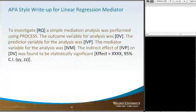It's a bit more simple for a mediator, the APA write-up. The caveat here is that this write-up is just a small subset of the larger write-up that you would use for this particular mediator. In the basics, to investigate the research question, a simple mediation analysis was performed using PROCESS. The outcome variable for the analysis was our dependent variable. The predictor variable was our independent variable predictor. The mediator variable for the analysis was IVM. The indirect effect of IVP on DV was found to be statistically significant.